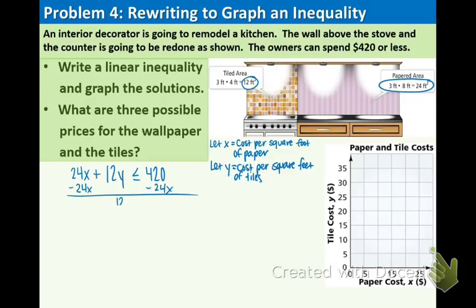We have 12y is less than or equal to negative 24x plus 420, divide by 12 on both sides and we get y is less than or equal to negative 2x plus 35.